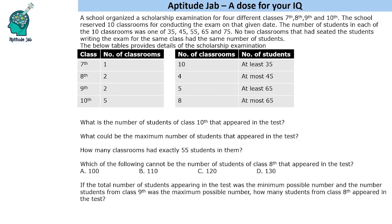Now, how to solve this set? We have five categories of classrooms — either they have 35, 45, 55, 65, or 75 students. Looking at the table, it says all 10 classrooms will have at least 35 students because that is the minimum, so this information is not required for us.